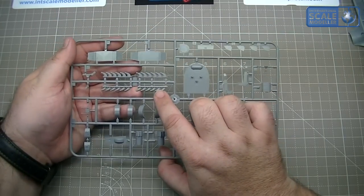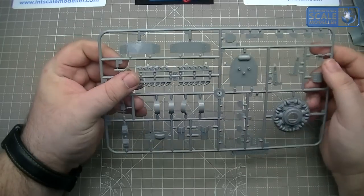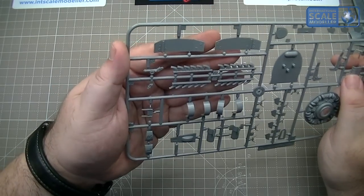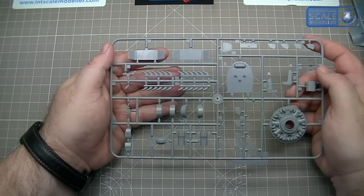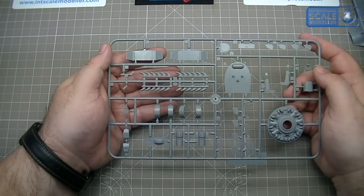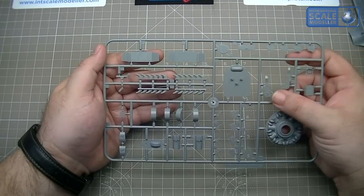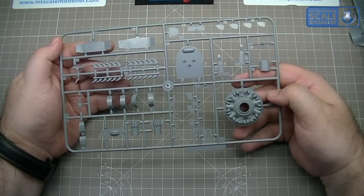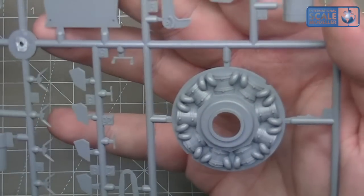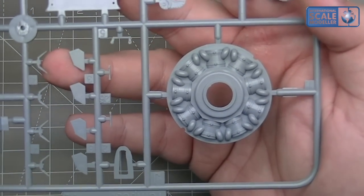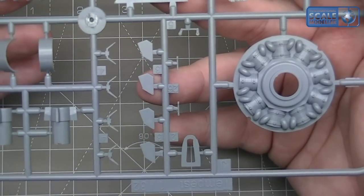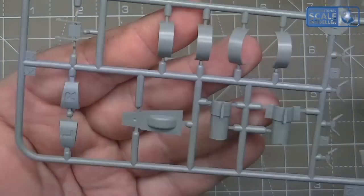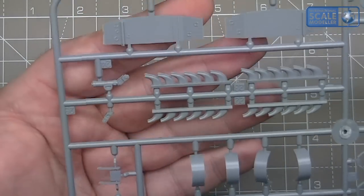This one we've got the exhaust. Now this is one piece I have bought some aftermarket for. They're molded in half, they're already hollow. But if you glue each one of those, you're going to have to do every seam. So I chose to get some aftermarket. I think I bought CMK aftermarket exhaust for it from Hannants.